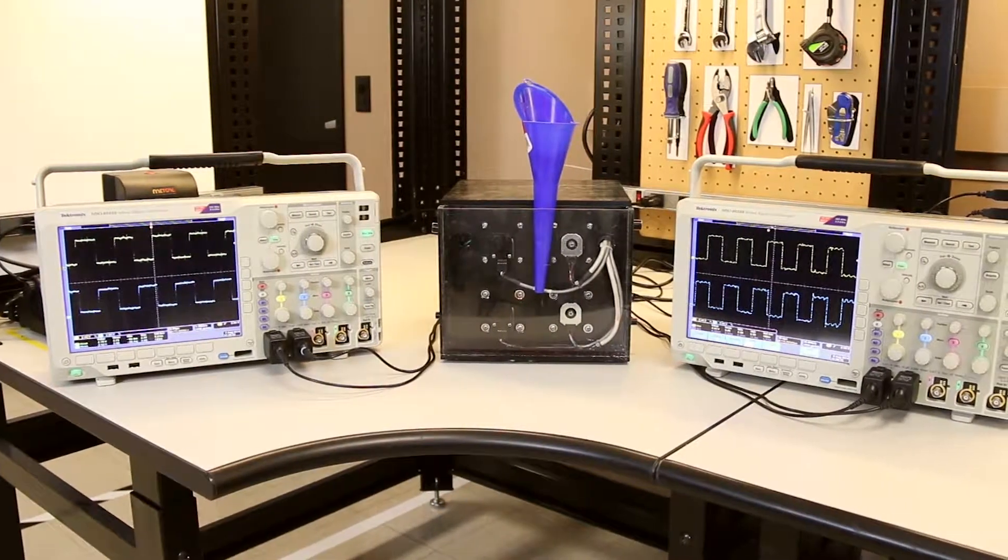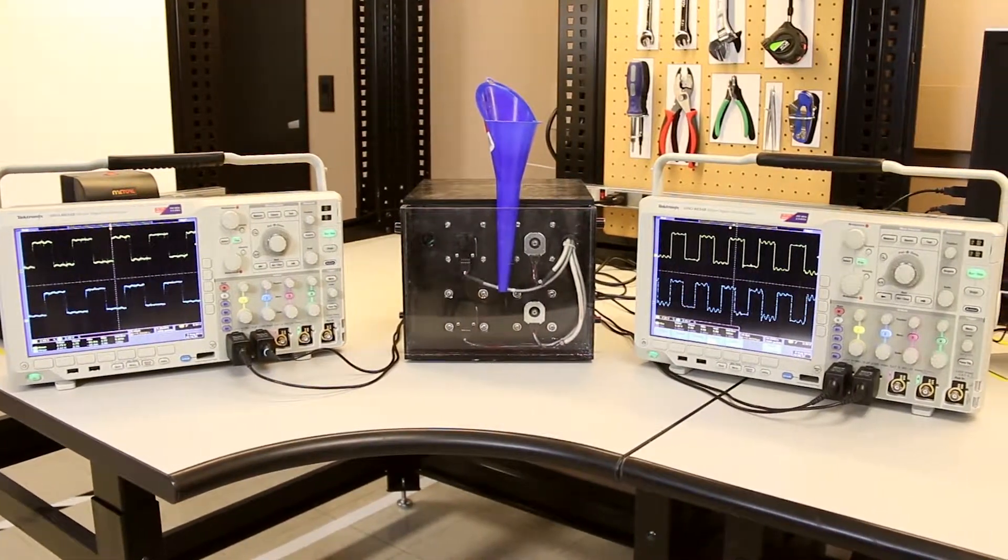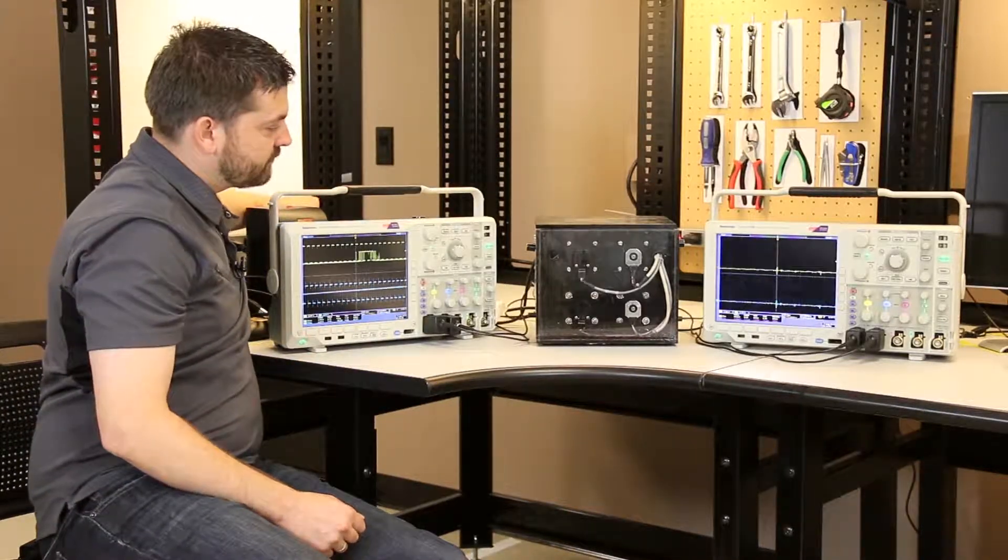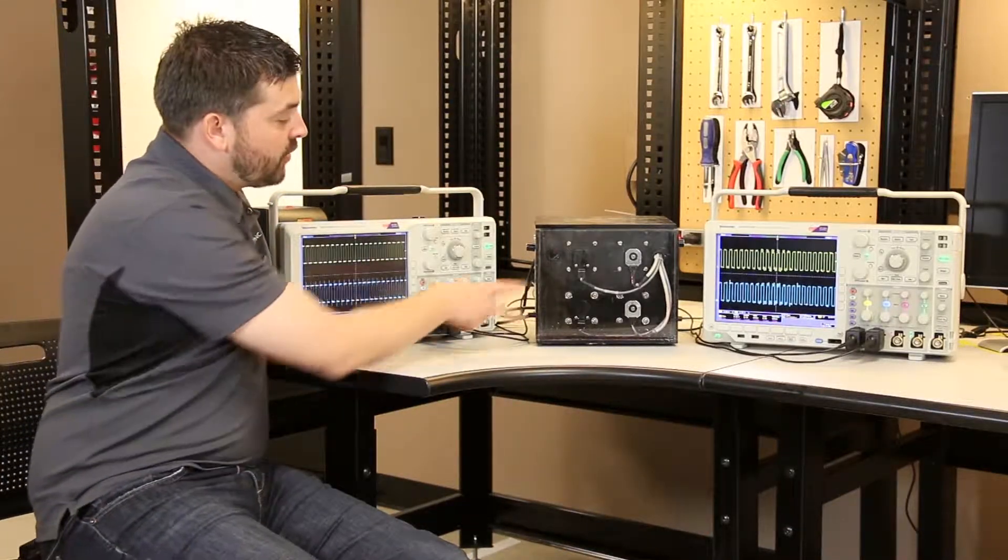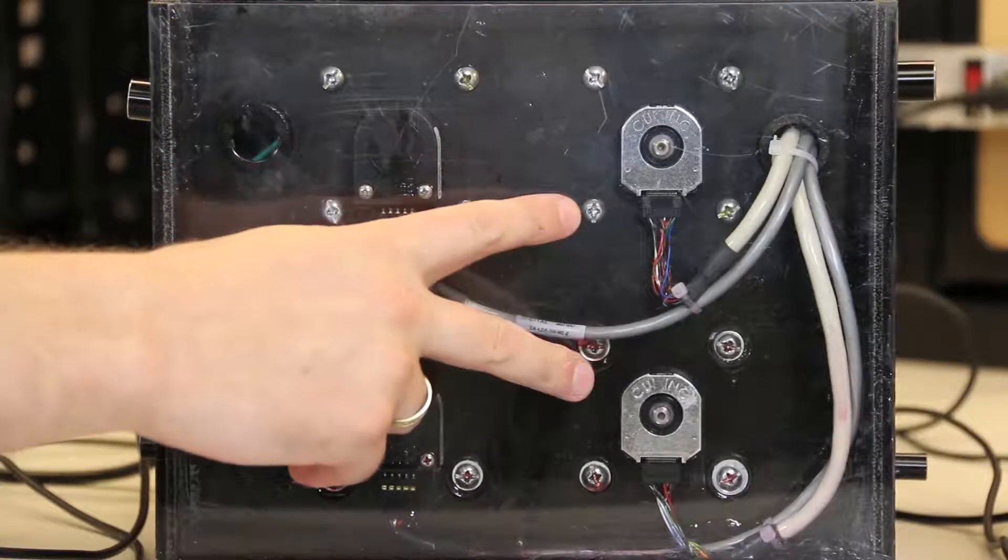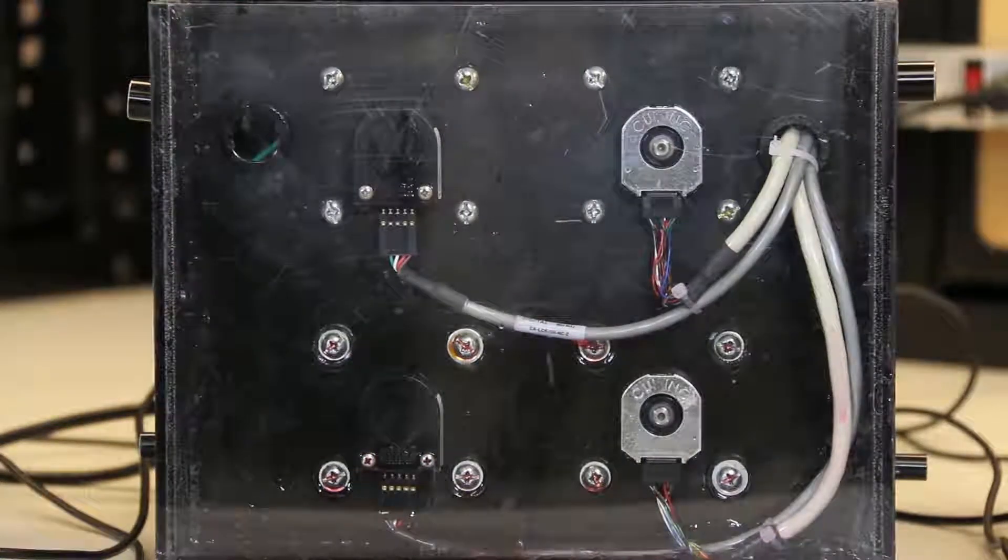Now, to demonstrate the rugged nature of the AMT encoders, we have this demo set up here, which I'll go ahead and turn on. We have two optical encoders set up and turning on motors here, and we have two AMT encoders set up on the far side.